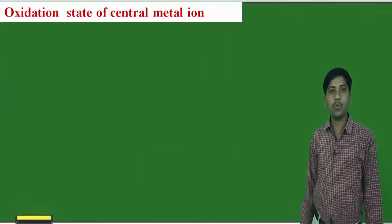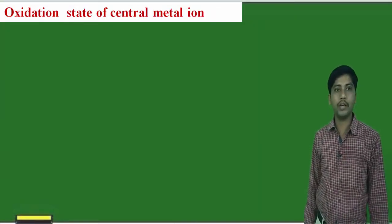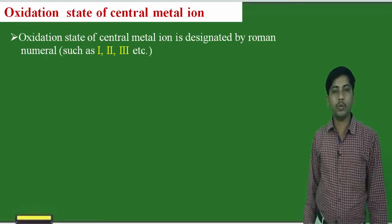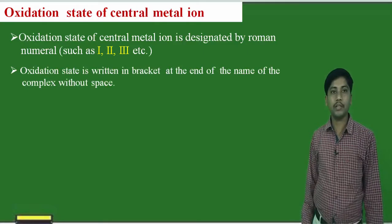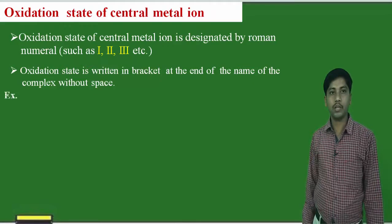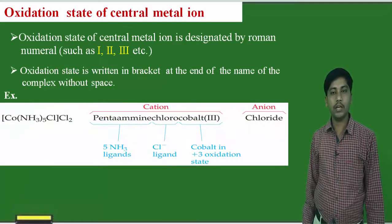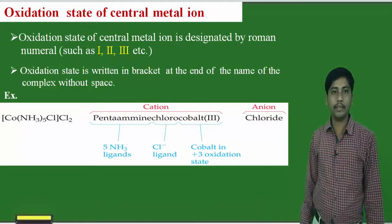Now we will see how to write the oxidation state of the central metal ion. The central metal ion's oxidation state is designated by a Roman numeral (such as II, III, etc.) in brackets. The oxidation state is written in brackets at the end of the metal name without a space. For example, [Co(NH3)5Cl]Cl2 is named pentaamminechloro cobalt(III) chloride.